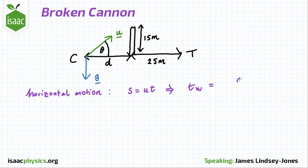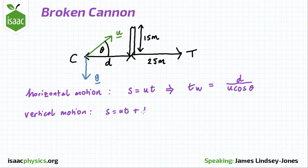To do this, we first consider the horizontal motion to find the time tw that it takes the cannonball to reach the wall. We then consider the vertical motion to find the height of the cannonball sw at this time.